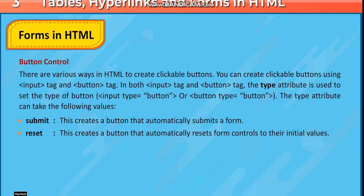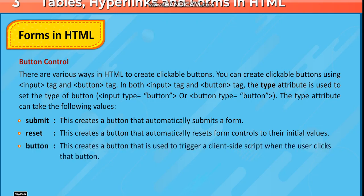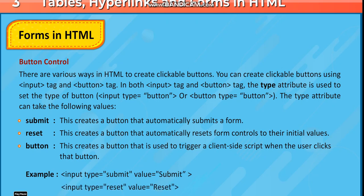Button: This creates a button that is used to trigger a client-side script when the user clicks that button. Example: input type is equal to submit, value is equal to "submit". Input type is equal to reset, value is equal to "reset".